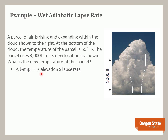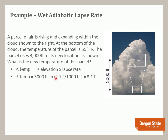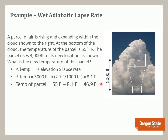The change in temperature equals the change in elevation times the lapse rate. In this case, we'll be using the wet or saturated adiabatic lapse rate. So 3,000 feet times the wet or saturated adiabatic lapse rate equals 8.1 degrees Fahrenheit. Therefore, the temperature of this parcel at the top of the cloud is 46.9 degrees Fahrenheit.